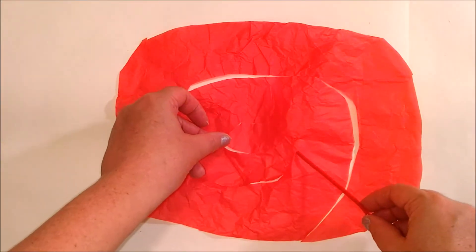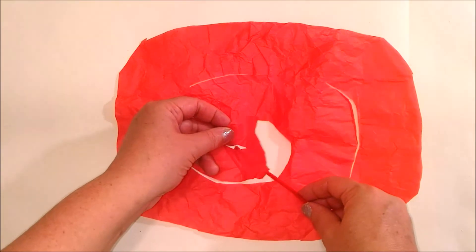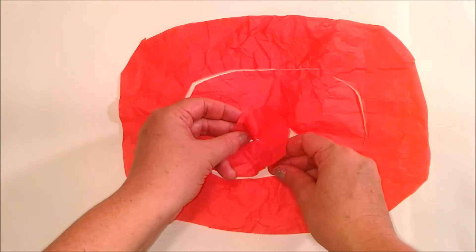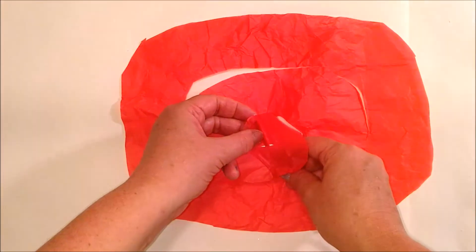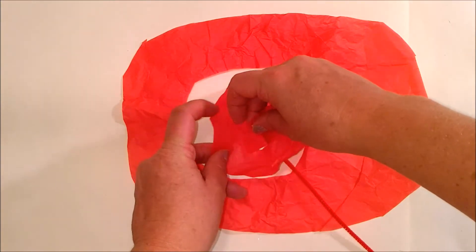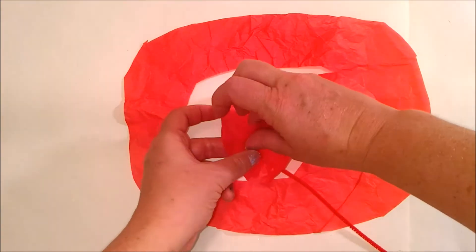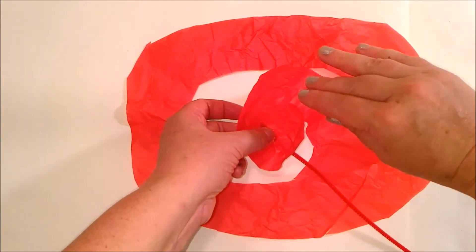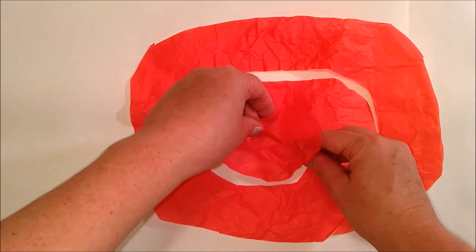Now what we're going to do is take our pipe cleaner and put it on the inside of the rose. I like putting my pipe cleaner in this direction because that way when you roll your rose, you're going to be rolling the petals so they're facing out instead of facing in. I like the shape of it.